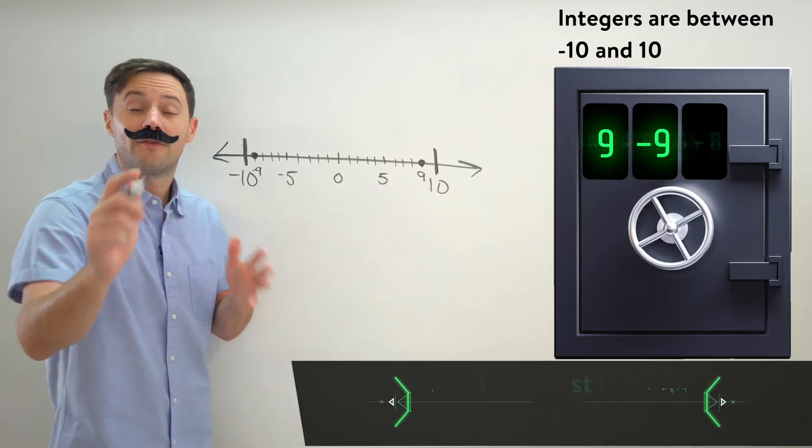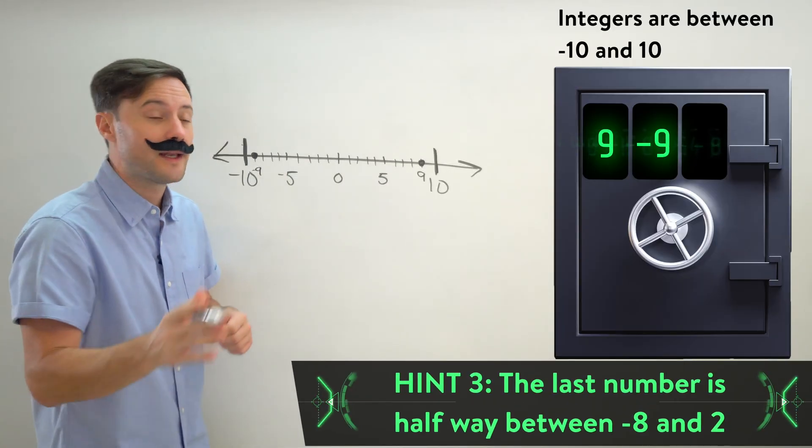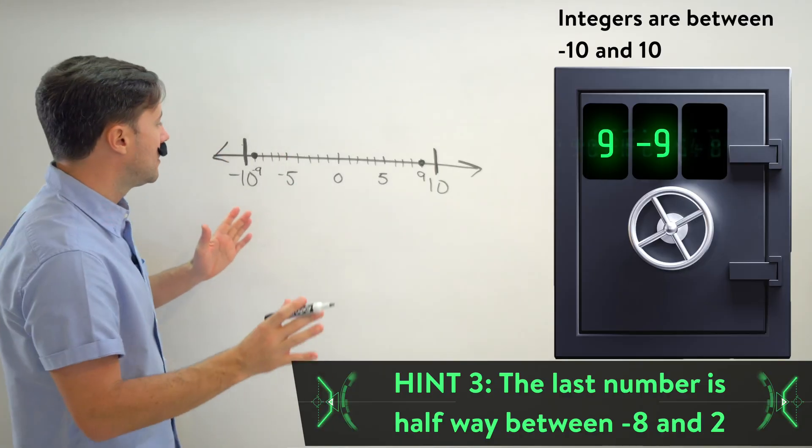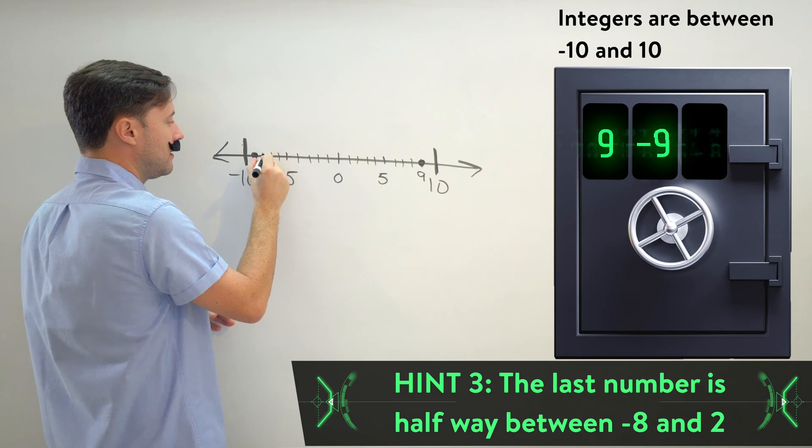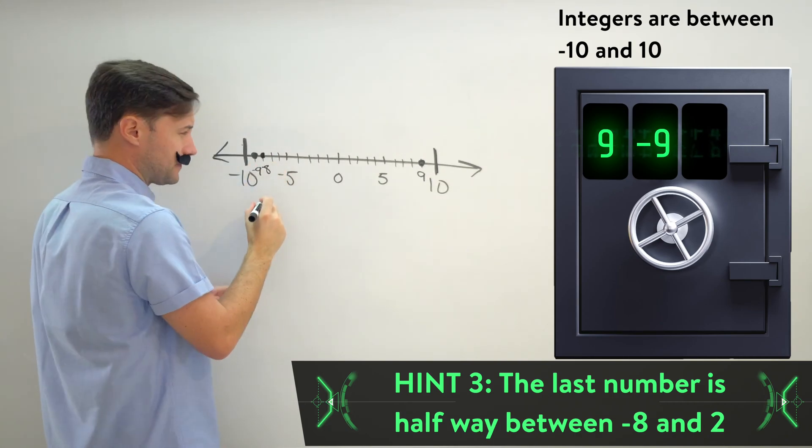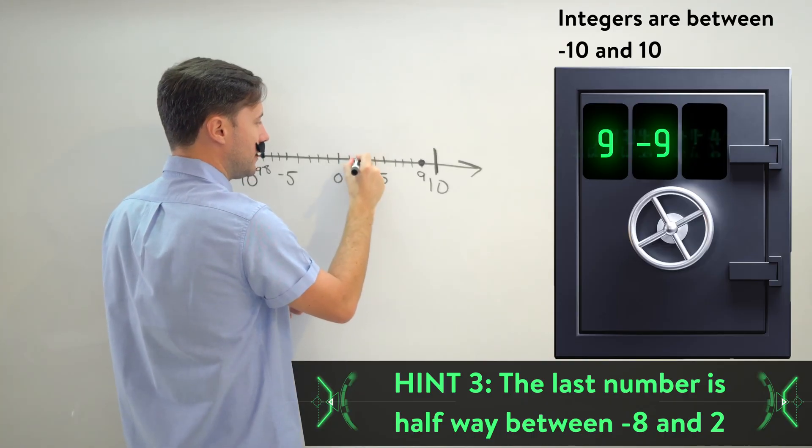Let's look at the third hint. And finally, the third digit is halfway between negative eight and two. Okay, well first negative eight, that's right here. That's easy. So that's negative eight. Two would be right here. One, two. There's two.